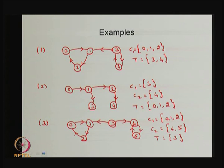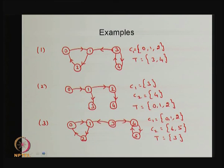In the third example with six states, state 3 has no backward arc and is therefore transient. States 0, 1, and 2 form one closed communicating class, while states 4 and 5 form another closed communicating class. So the third example has two closed communicating classes of states, unlike the first example which has one closed communicating class plus transient states.